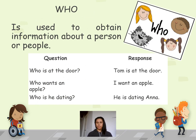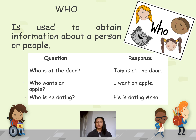Let's start with 'who.' Who is used to obtain information about a person or people. Para obtener información sobre una persona o sobre varias personas. Examples: Who is at the door? Tom is at the door. Who wants an apple? I want an apple. Who is he dating? He is dating Ana. Aquí estamos preguntando por personas. Who para personas.